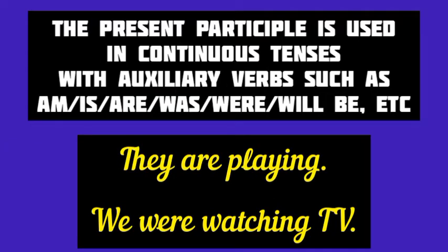Now, we know that the participle is a non-finite verb. The present participle is used in the continuous tenses of the verb with auxiliary verbs such as am, is, are, was, were, will be, shall be, etc. For example, they are playing — here the present participle playing is used in the present continuous tense. We were watching TV — here the present participle watching is used in the past continuous tense.